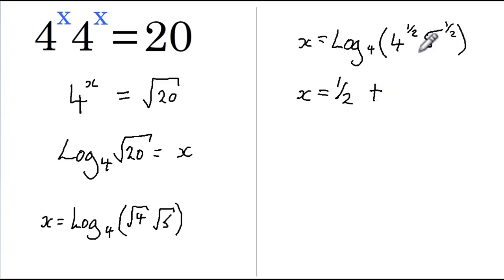Remember if we're taking the log of two numbers multiplied together, this becomes a plus sign. And then again we bring the half to the power of a half and then log base 4 of 5.